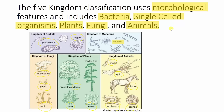The main thing you need to get from this is that you should be able to name the five different kingdoms within the five kingdom classification: bacteria, single-celled organisms, plants, fungi, and animals.